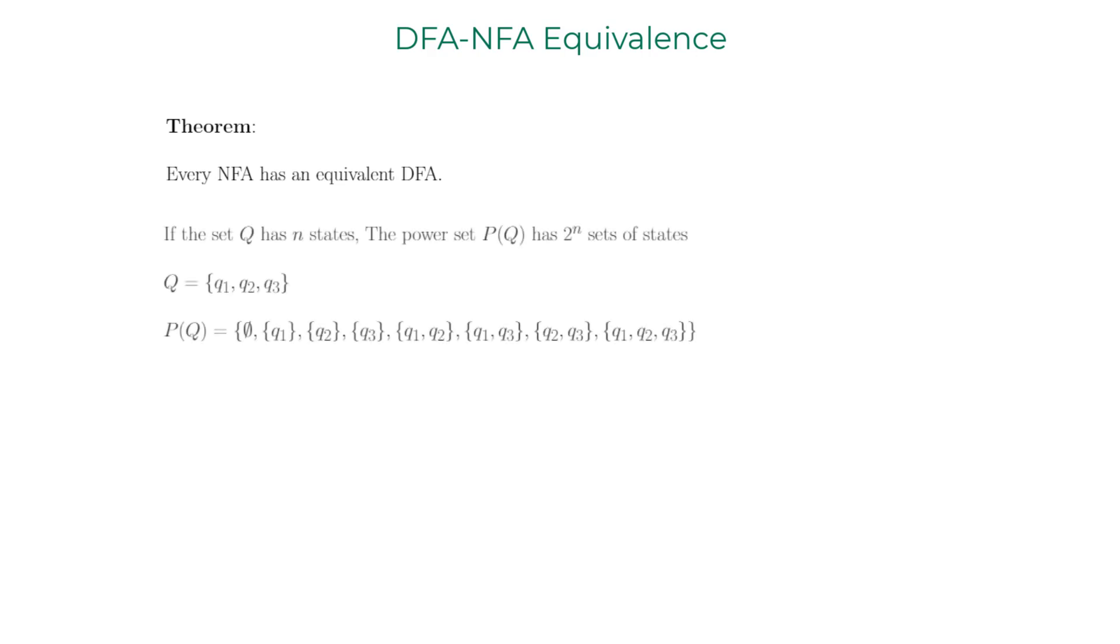Earlier I've shown you that if an NFA has n states it can transition to any of the 2 to the power n subsets of states, which is basically the power set of the states. So each subset of states corresponds to one of the possibilities that the DFA must remember. For a start, the DFA that can simulate an NFA with n states should have 2 to the power n states.